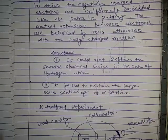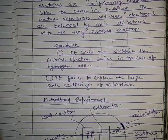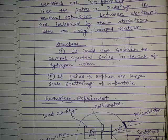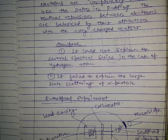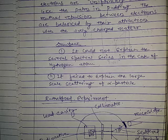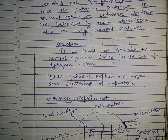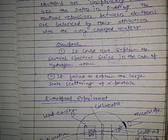The main drawback or limitation of the Thomson atomic model is that it could not explain the several spectral series in the case of the hydrogen atom. It also failed to explain the large-scale scattering of alpha particles in the case of the Rutherford experiment.